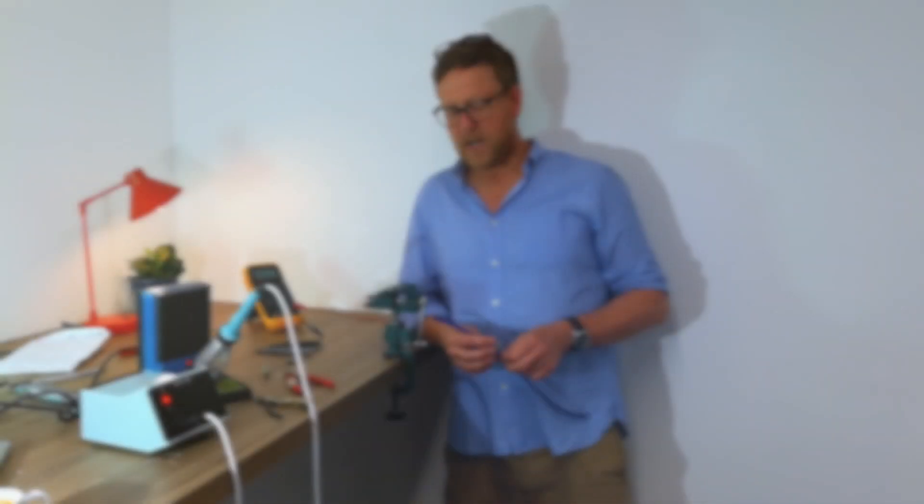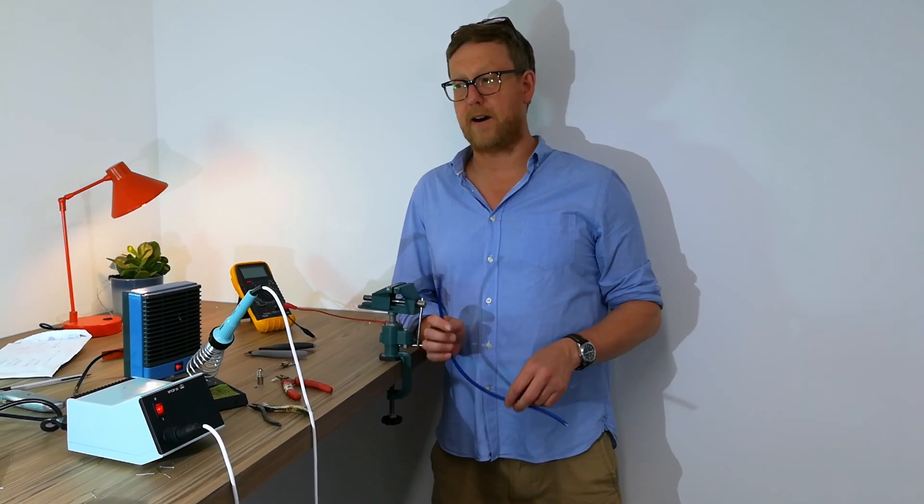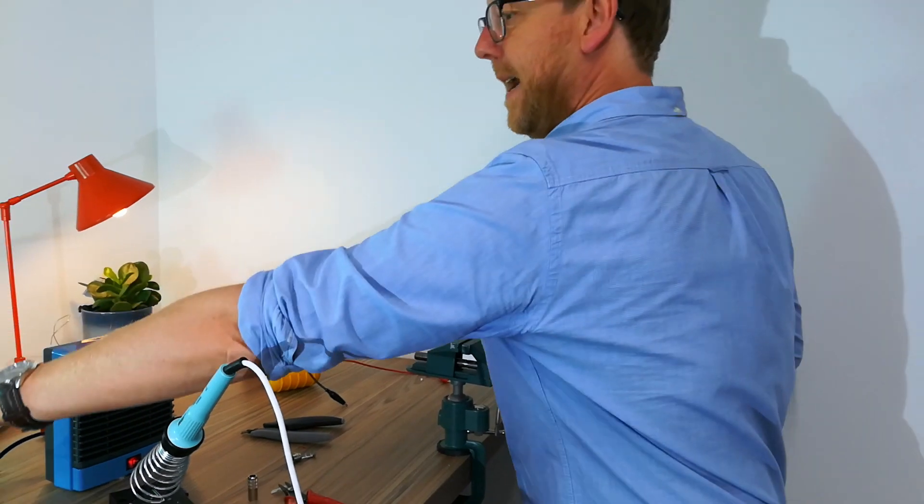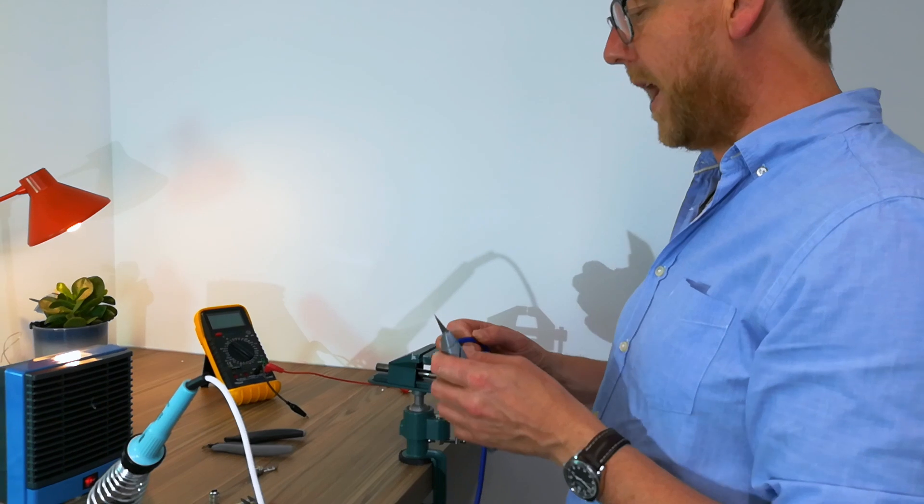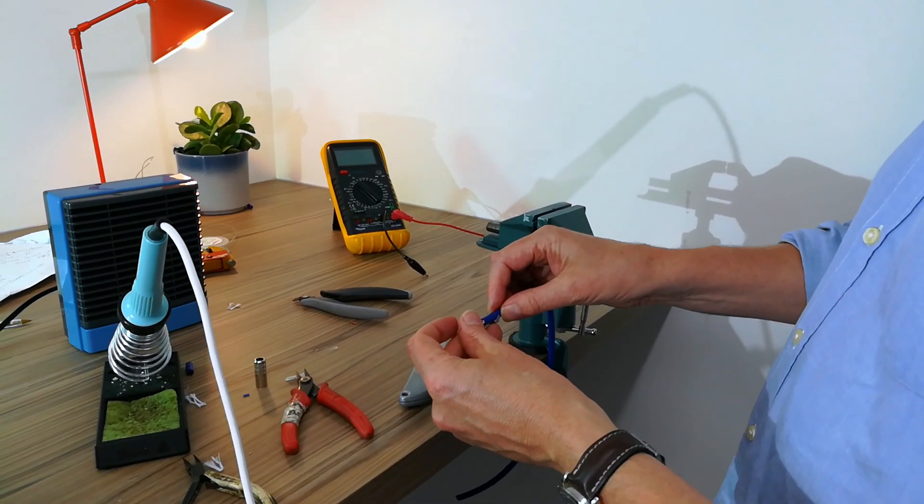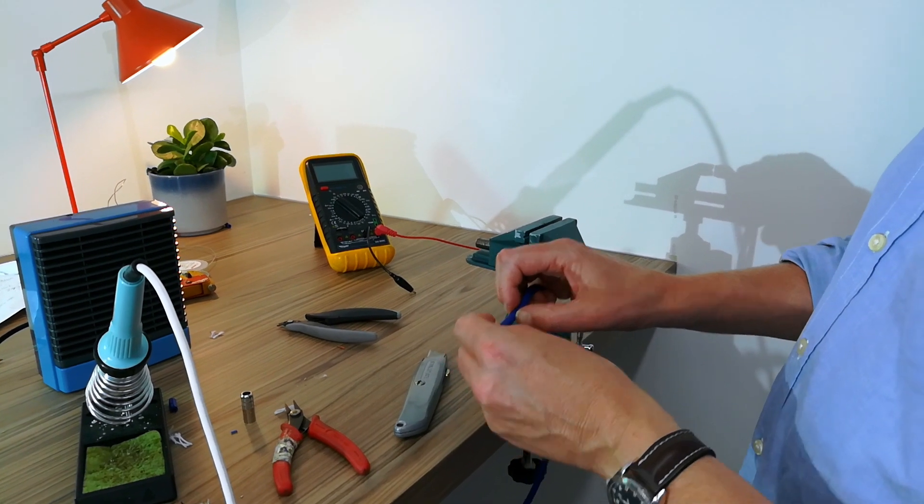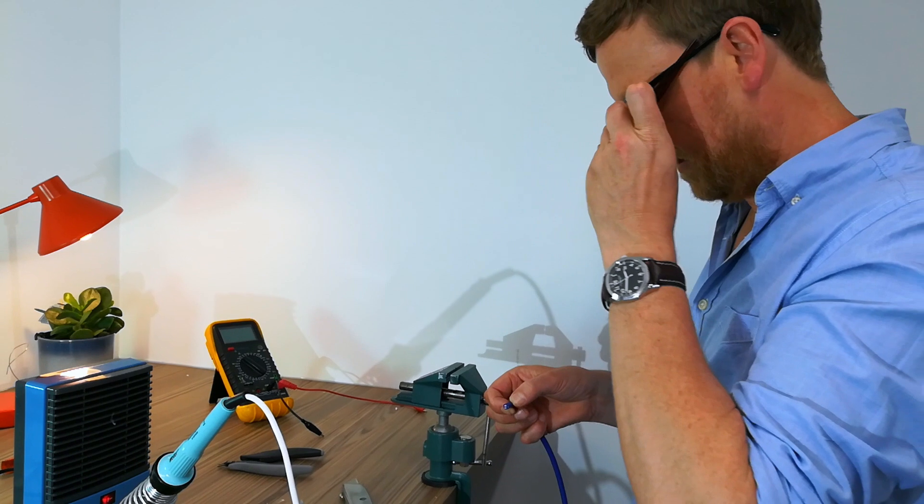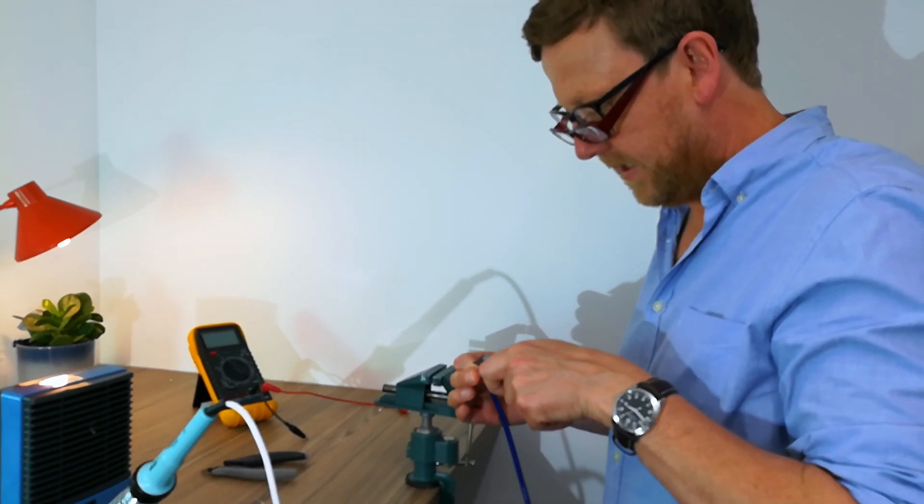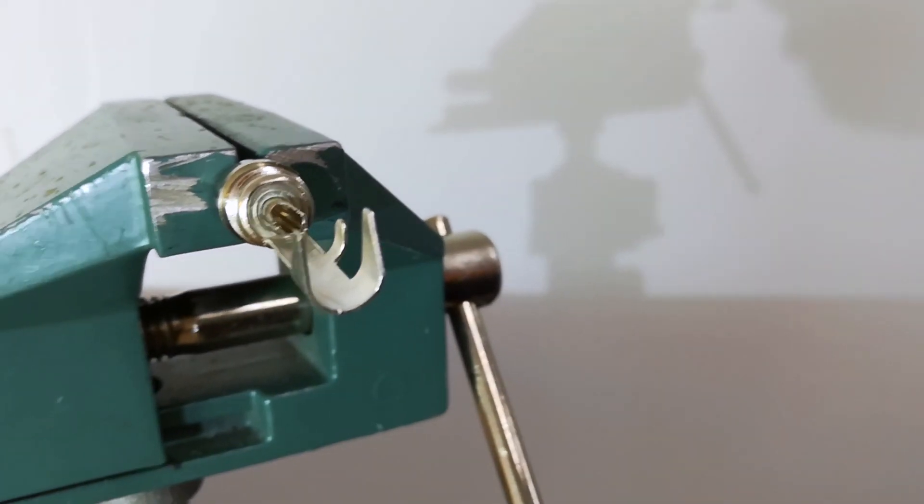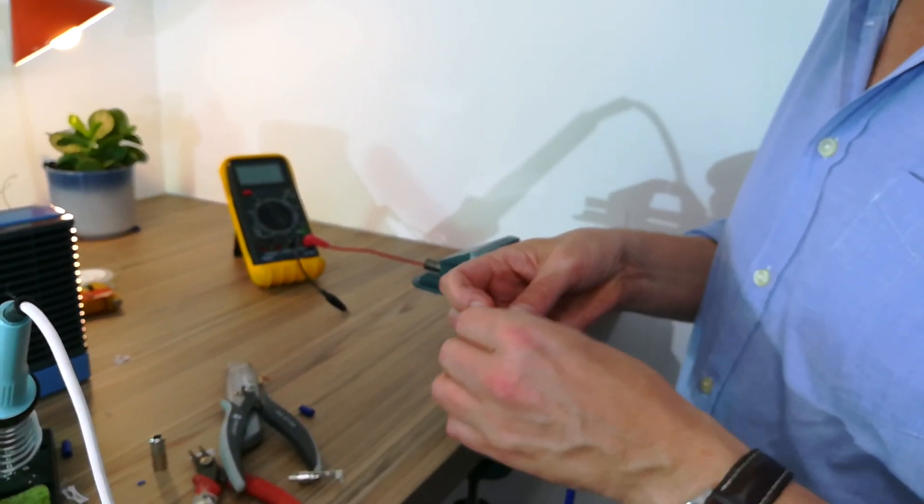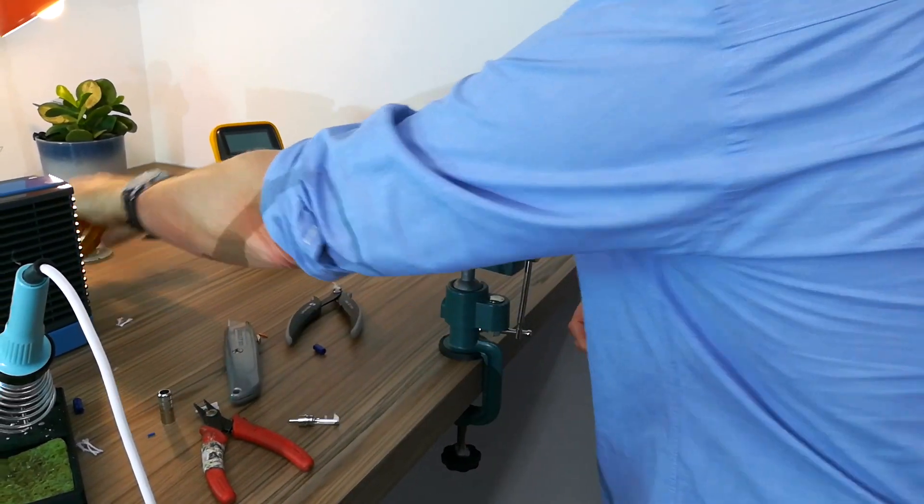So now we're moving on to unbalanced cables, RCA to XLR. With this one, we're using a two-conductor screen cable, the Van Damme that we were using earlier. And this connects up a particular way to the XLR. So stripping it down, just to gauge how much we need to cut off, say about there.